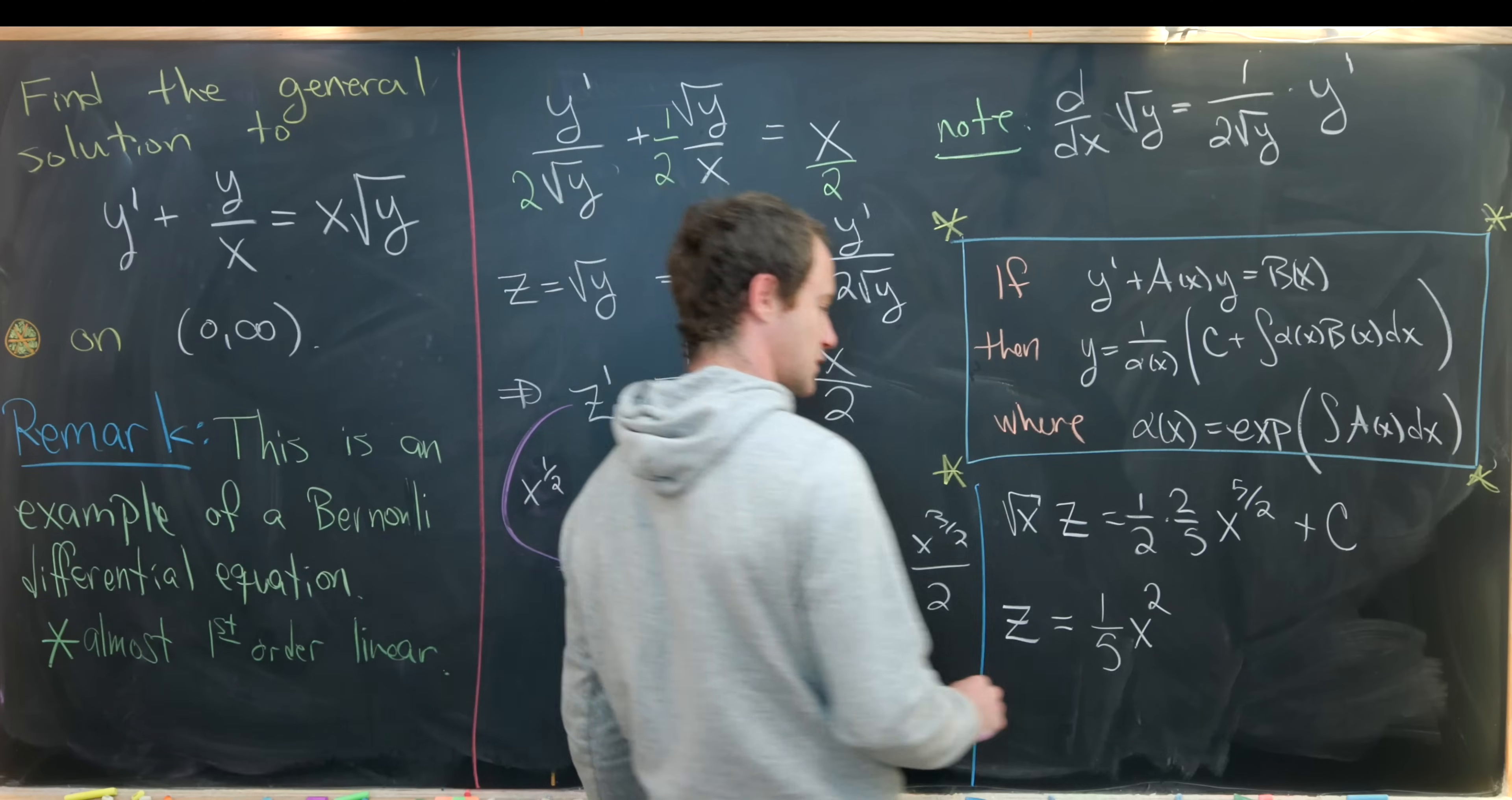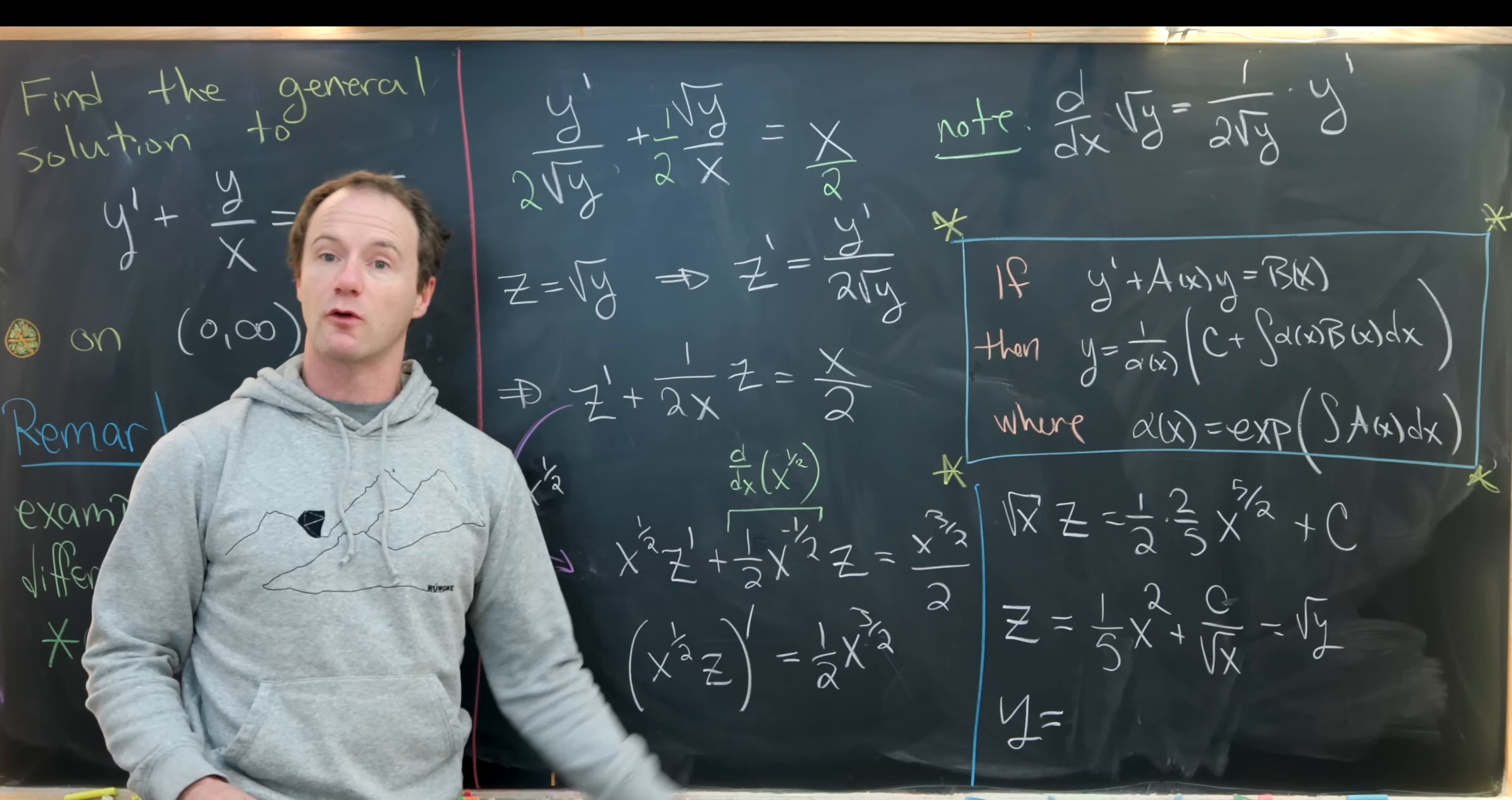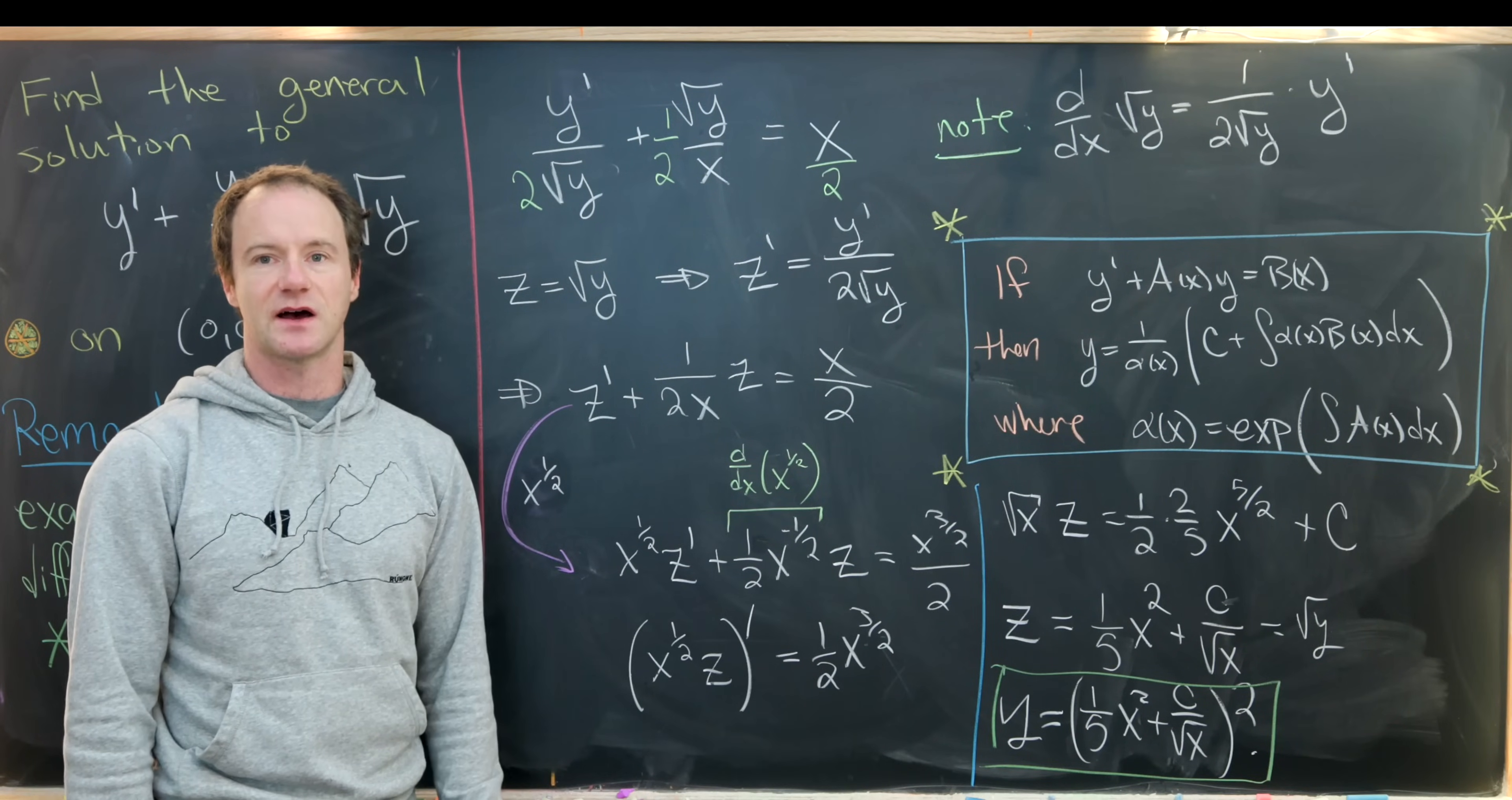Now let's recall that z was equal to the square root of y. That means in the end our equation for y is given by one fifth x squared plus our constant over the square root of x, quantity squared. That's our final answer to our differential equation, and that's a good place to stop.